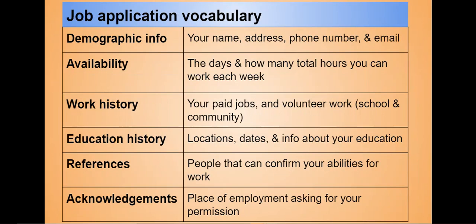Before we talk about how to complete a job application, let's think about the vocabulary. Demographic information is needed to complete a job application. This includes your full name, your address, a phone number, and an email. When providing an email, please be sure to provide a personal or professional email address. Your availability refers to the days that you can work throughout the week and the total amount of hours you can work each week.